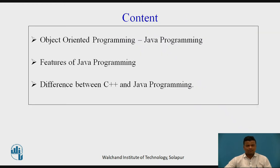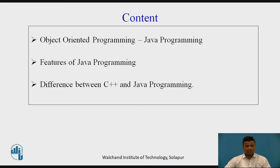The contents are: first we will see object-oriented programming, since Java programming is object-oriented programming. After that, there are different features of Java programming. And at the last, we will see the difference between C, C++ and Java programming.